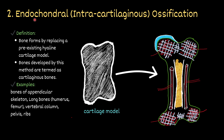Next is endochondral or intracartilaginous ossification. Here bone forms by replacing a pre-existing hyaline cartilage model. Bones developed by this method are termed cartilage bones, such as bones of the appendicular skeleton — long bones like the humerus and femur — as well as the vertebral column, pelvis, and ribs. This is a pre-formed hyaline cartilage model that becomes transformed into a well-developed bone.